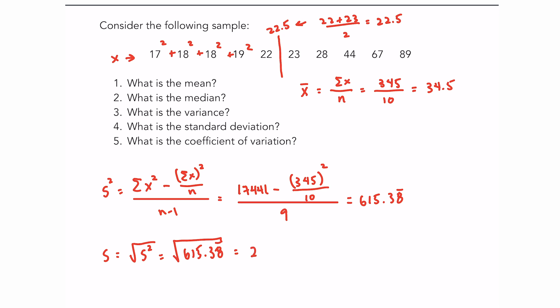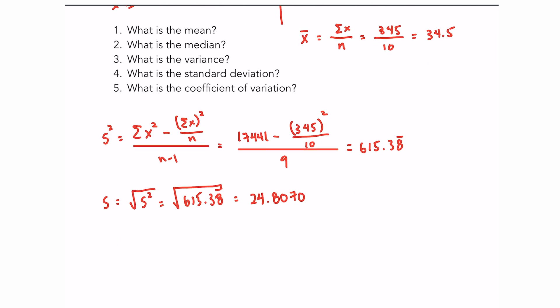Finally, the coefficient of variation is what you get when you divide the standard deviation by the average. So if I take the standard deviation that we just found, 24.807, divided by the average of 34.5, multiply by 100 because we like to express this typically as a percentage, and you should get a coefficient of variation of 71.9%.